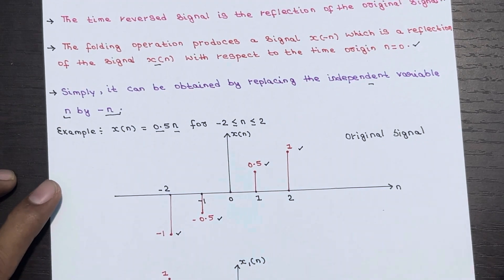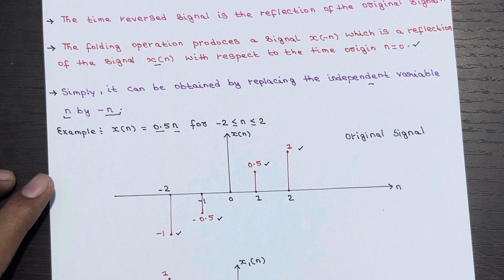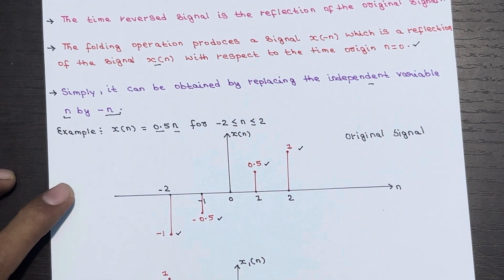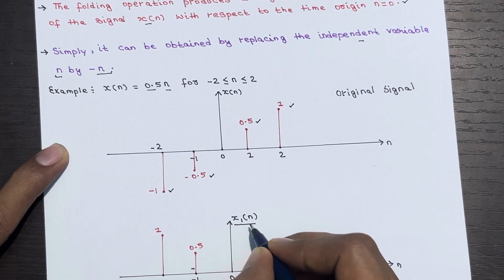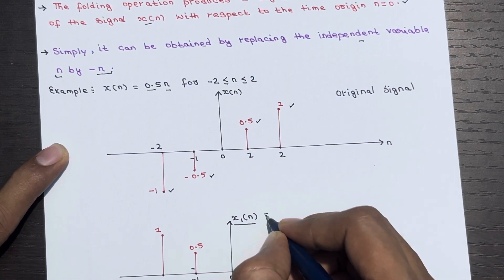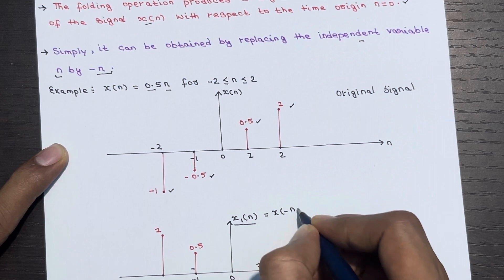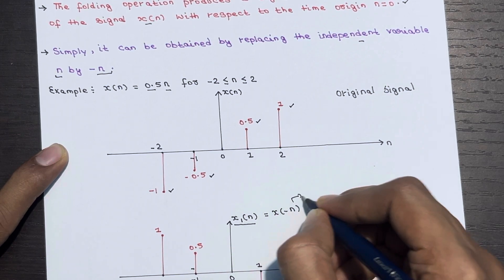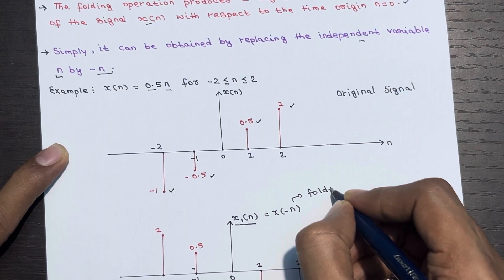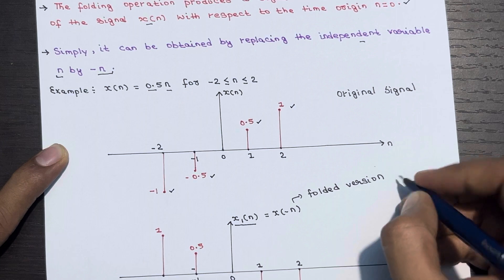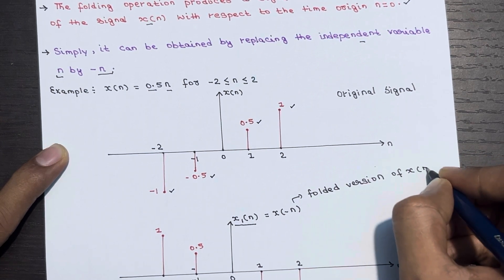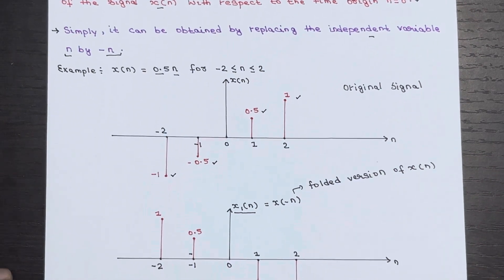Now we need to reverse this signal, or perform a folding operation. We replace the independent variable n by minus n. So X1 of n is nothing but X of minus n — this is the folded signal, the folded version of X of n.